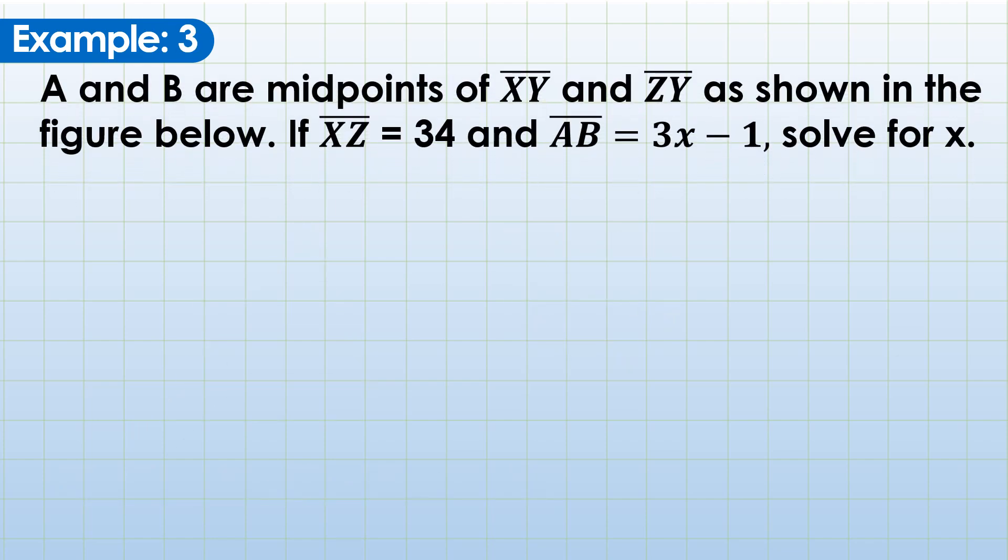Example 3. A and B are midpoints of XY and ZY as shown in the figure below. If XZ is 34, our third side, and AB is 3x minus 1, which is actually our midline, solve for x.